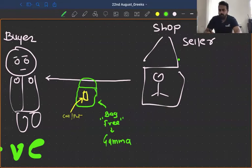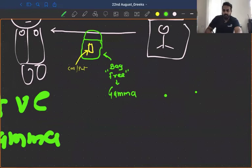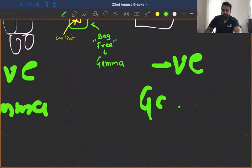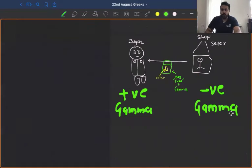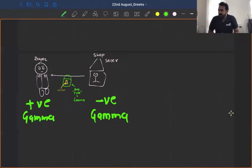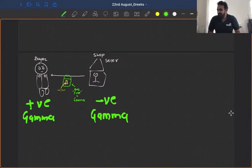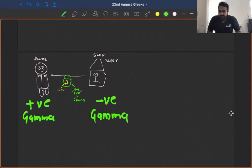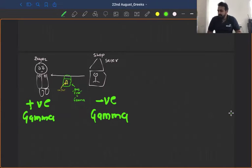If you're a seller of the option — it doesn't matter whether it's a call or put — you're going to have a negative gamma. So the easiest way to approach this: buyer of the option equals positive gamma, seller of the option equals negative gamma. Long is positive, short is negative.